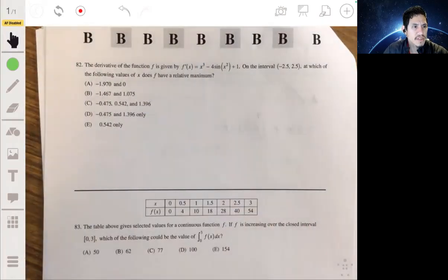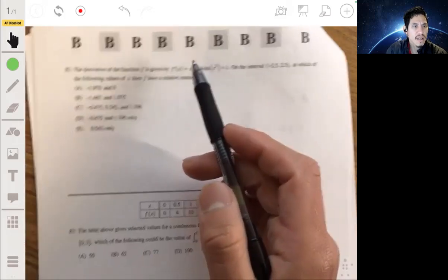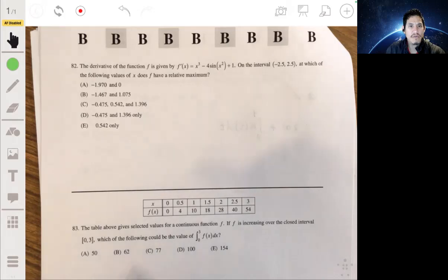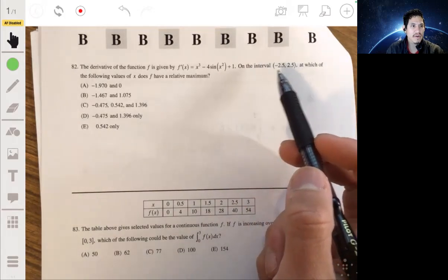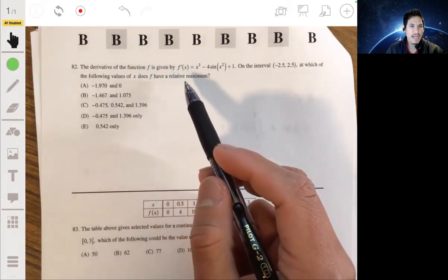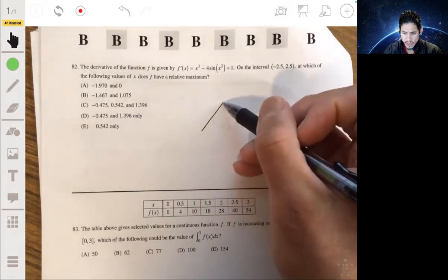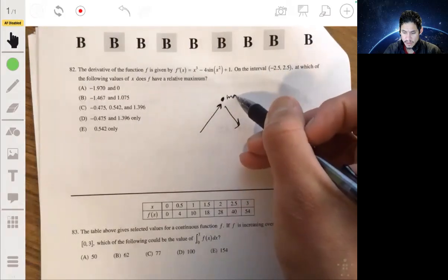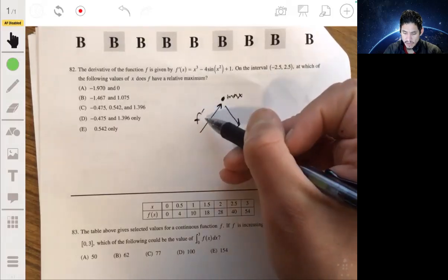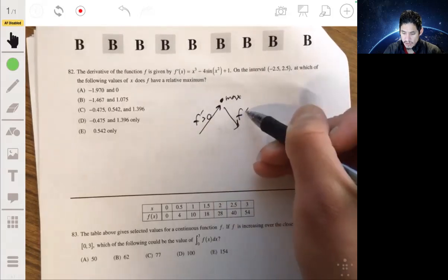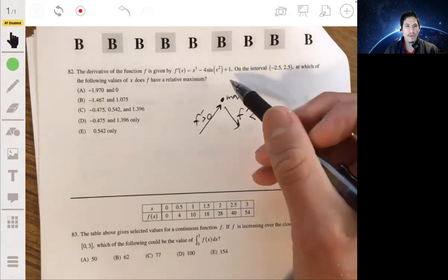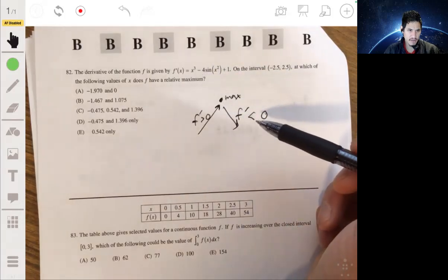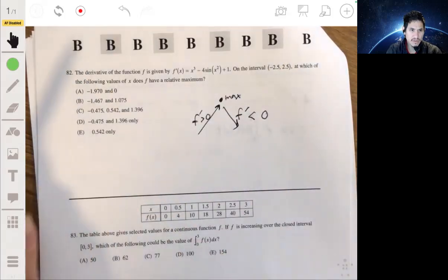Problem 82: the derivative of the function is given by f prime of x equals x cubed minus 4x minus 4 times sine of x squared plus 1, on the interval negative 2.5 to 2.5. For which value of x does f have a relative maximum? Remember, relative maximum occurs when the function goes from increasing to decreasing. When it's increasing, f prime is positive, and when it's decreasing, f prime is negative. We want to look for where the graph of f prime changes from positive to negative value. Let's graph this and analyze it.